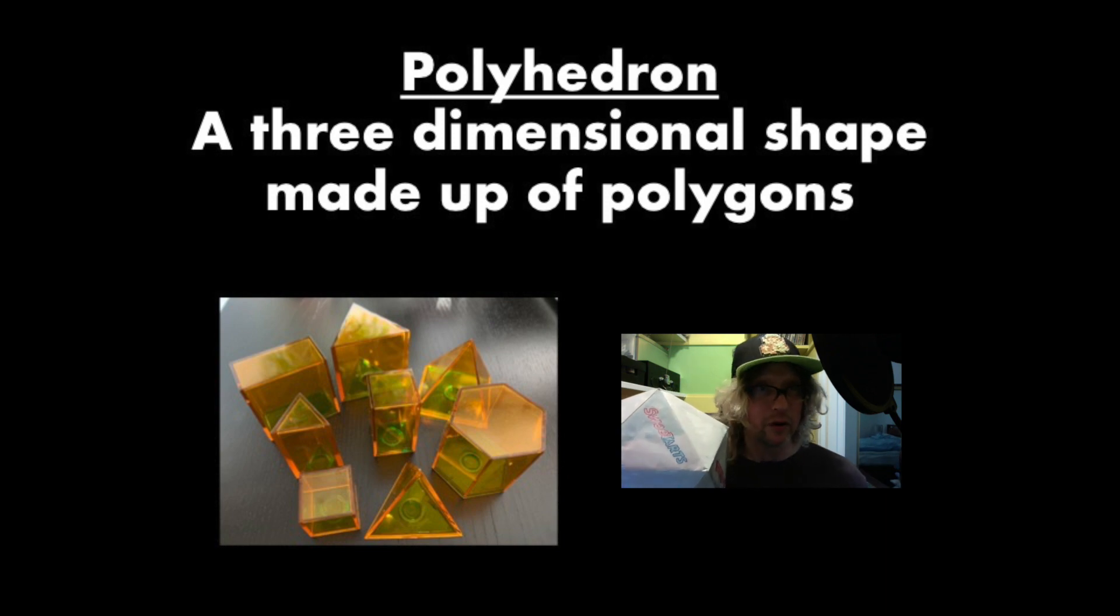We know that from our unit on two dimensional geometry. So equilateral triangle, equilateral triangle, and so on. So this is a polyhedron. Plural of the word polyhedron is polyhedra. All right, let's move on.